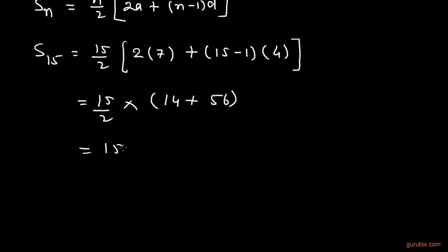So, this is equals to 15 over 2 multiplied by 70, and now we can easily cancel out 2 with this 70 to get 35.